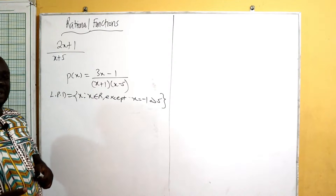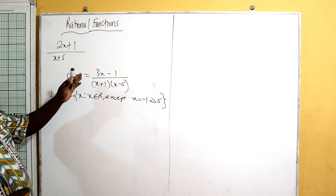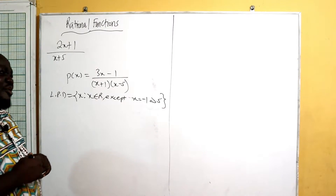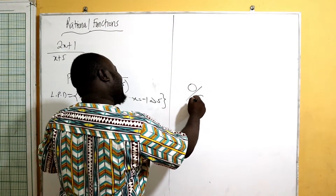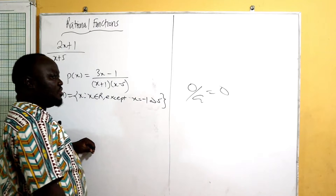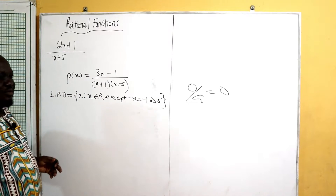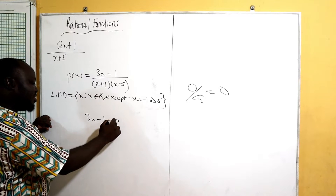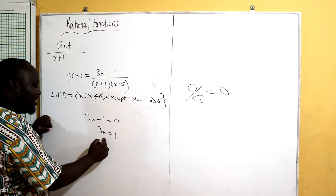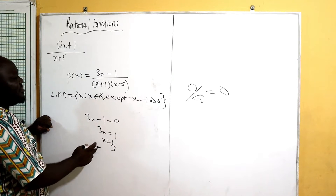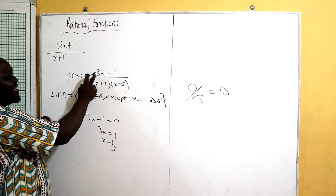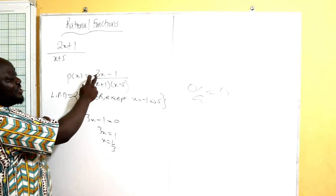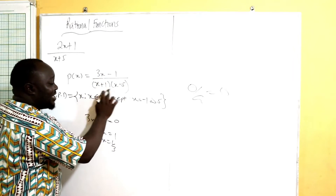Now we want to find the zeros of p of x — what value will make this function zero? Zero over any number is zero, so we need to find what makes the numerator zero. When three x minus one equals zero, three x equals one, so x equals one over three. When x is one over three, three times one-third minus one equals zero, so the numerator becomes zero.